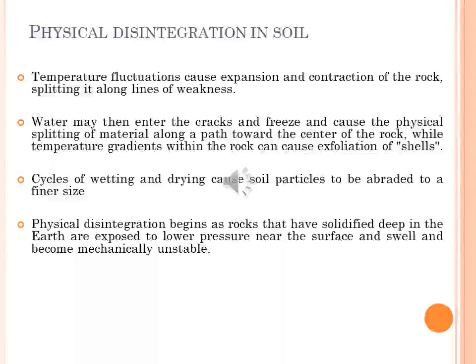Physical and chemical disintegration: temperature fluctuations cause expansion and contraction of rock, splitting it along lines of weakness. Water may enter cracks, freeze, and cause physical splitting of material toward the center of the rock, while temperature gradients within the rock can cause exfoliation of shells. Cycles of wetting and drying cause soil particles to be abraded to finer size, as does physical rubbing by material moved by wind, water, and gravity. Water can also deposit minerals within the rock that expand upon drying, thereby stressing the rock. Organisms reduce parent material and create pores through the mechanical action of plant roots and the digging activity of animals.